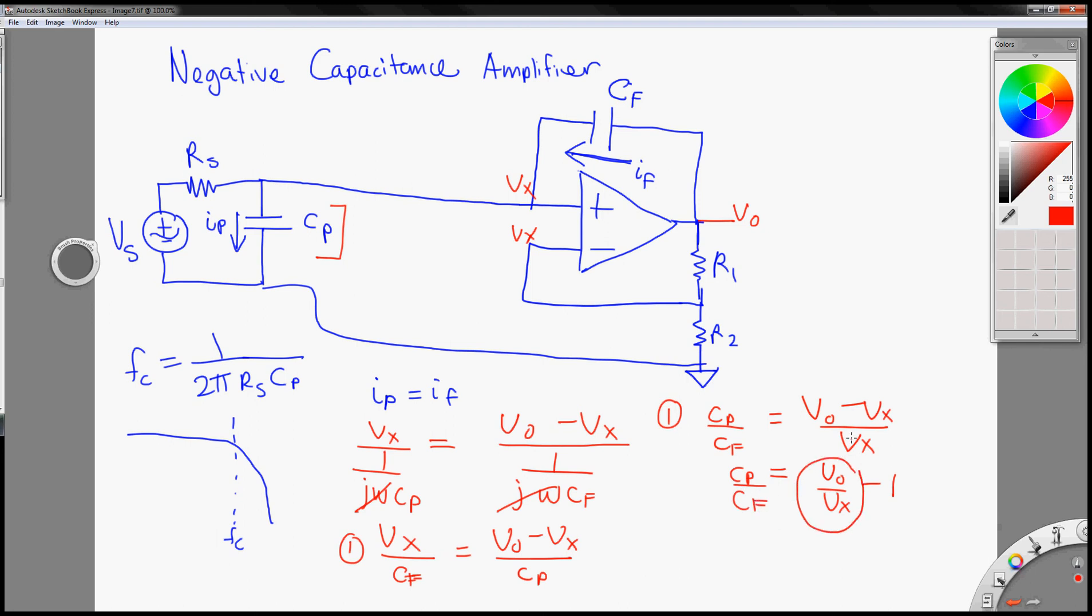So what is this right here? Well, if you notice, this is a non-inverter, so Vout is equal to Vn, which is Vx here, in our case, 1 plus R1 over R2. That's the gain for a non-inverter.